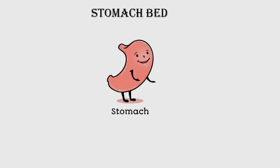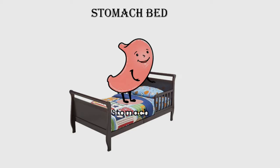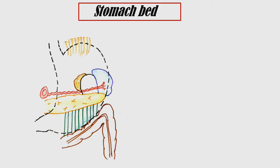Today we will see the structure of the stomach bed. This is the stomach and this is the bed. Most students will think there is a bed for the stomach — it's not like that. These are the structures which will form the posterior relation with the stomach. We call them the stomach bed. We will start from above downwards.